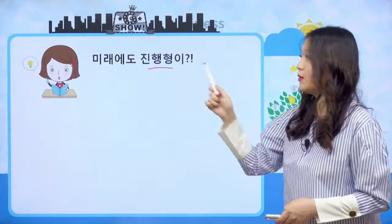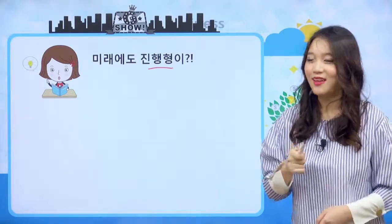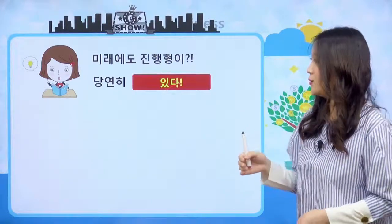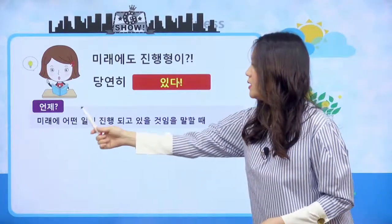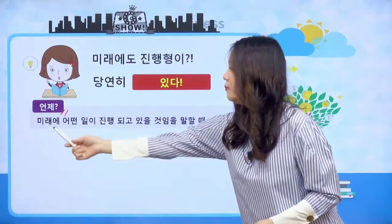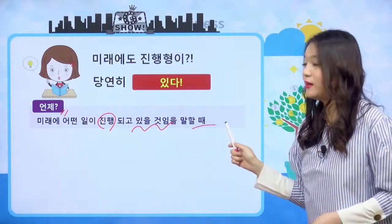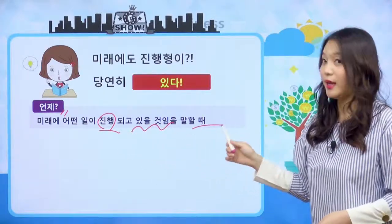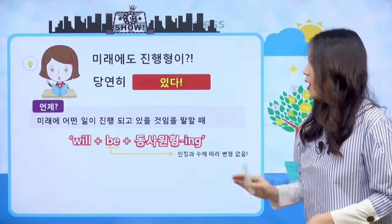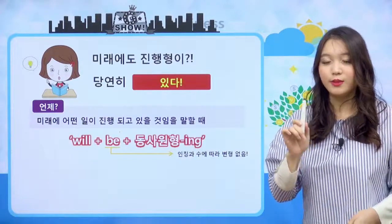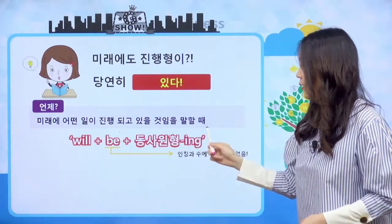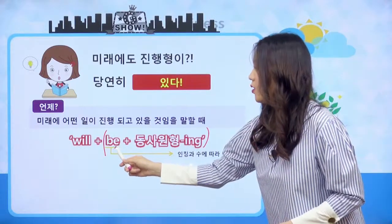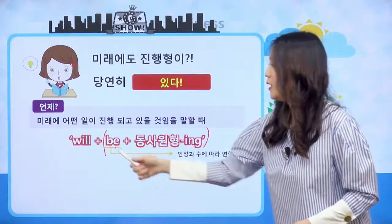'Jason is going on a trip next week' 하면 Jason은 다음 주에 여행 갈 거야라는 문장입니다. 미래를 나타내는 거 뭐 있었어요? 지금까지 will 있었고 be going to 있었고, 아주 가깝거나 확실한 미래일 때는 현재 진행 시제가 있었네요. 이번에는 미래 진행형이 있는지 한번 알아볼게요. 미래도 진행형이 있다라고 이야기를 했었죠. 미래의 진행형은 어떻게 만드는지 한번 살펴보도록 하겠습니다.